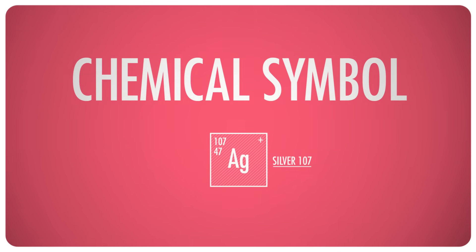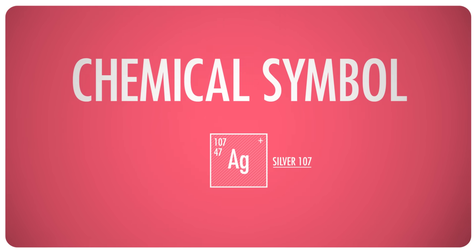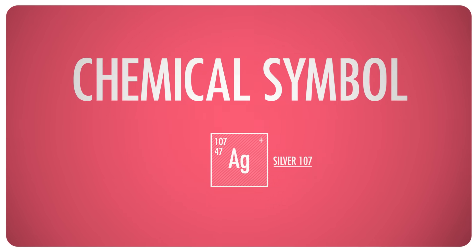There's an easy way to write all this out, of course, to keep your information straight. The chemical symbol with the atomic number or number of protons here, the mass number or number of protons and neutrons here, and the charge out here, which tells you by simple addition or subtraction how many electrons there are.